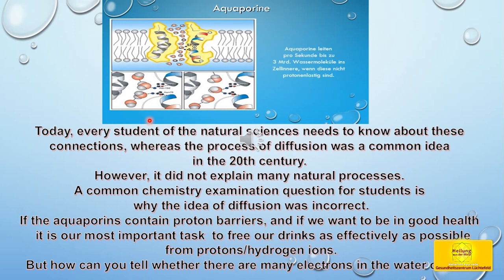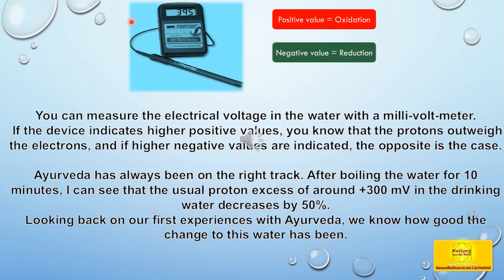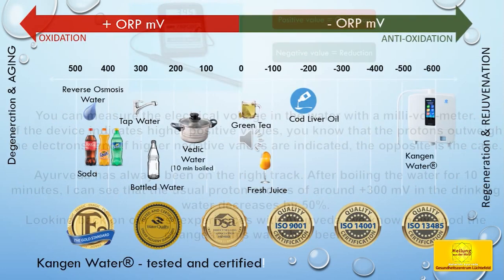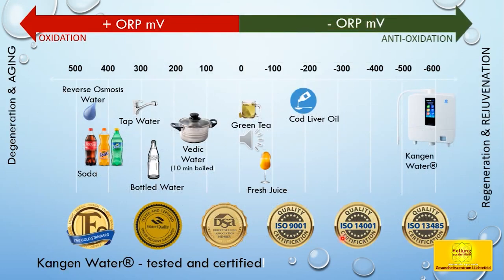But how can you tell whether there are many electrons in the water or not? You can measure the electrical voltage in the water with a millivolt meter. If the device indicates higher positive values, you know that the protons outweigh the electrons, and if higher negative values are indicated, the opposite is the case. Ayurveda has always been on the right track. After boiling the water for 10 minutes, the usual proton axis of around plus 300 millivolt in drinking water decreases by 50%. Here you can see the entire scale of the least oxidative and most oxidative liquids. Reverse osmosis water and soda are the most oxidative, whereas Kangen water is the least oxidative.